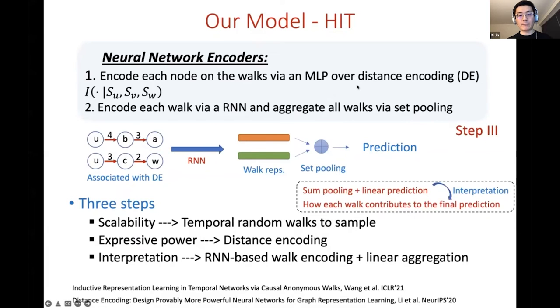If we adopt the sum pooling here as a set pooling and the final prediction layer is just a linear model, then the model becomes interpretable in some sense. So our model can naturally tell how each walk contributes to the final prediction. And then we can use this architecture to make prediction and find the walks that contribute mostly to each type of prediction and we use the walks as a model interpretation.